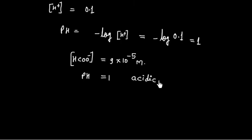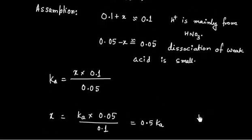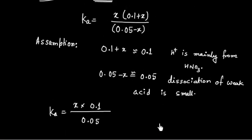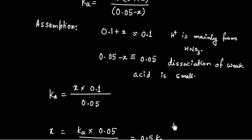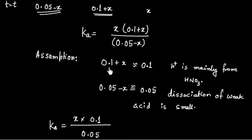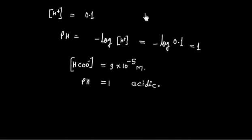This is expected since we have a solution of a strong acid plus a weak acid. We can also check whether our assumptions are valid. X is on the order of 10⁻⁵, so adding it to 0.1 gives approximately 0.1 — the assumption holds. Similarly for 0.05 − X ≈ 0.05. Both assumptions are valid.